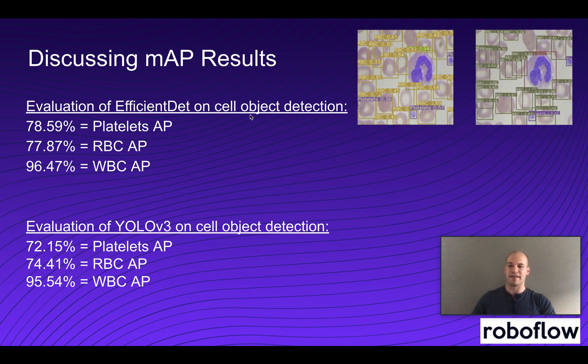So looking at the MAP results, if we look at MAP results for EfficientDet, we see that we got 78% AP on platelets, whereas for YOLO v3 we got 72%. For red blood cells EfficientDet gets 78%, whereas for YOLO v3 it's only getting 74%. And for white blood cells we're seeing 96% for EfficientDet and 95% for YOLO v3.